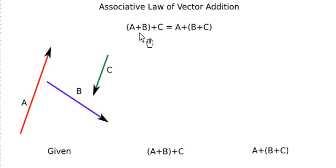To prove this law for vector addition, I take the example of addition of three vectors. I have three vectors a, b, and c that need to be added. So the addition is independent of the order in which I add them — this is the associative law, and vectors follow the associative law, which we will prove in this video.